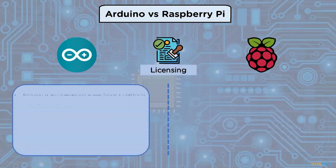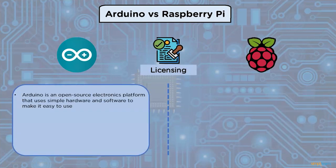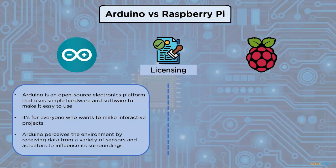Regarding licensing: Arduino is an open-source electronics platform that uses simple hardware and software to make it easy to use. It's for everyone who wants to make interactive projects. Arduino perceives the environment by receiving data from a variety of sensors and actuators to influence its surroundings.